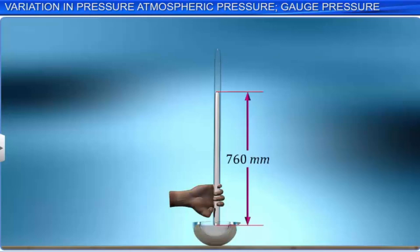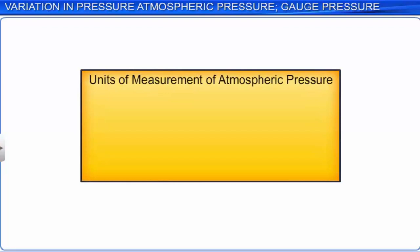There are different units of measurement for atmospheric pressure. It can be measured in mm or cm of mercury column in the barometer, or in Torricelli (1 Torricelli = 1 mm of mercury column), or in newton per square meter (pascal) in SI, or dyne per square centimeter in the CGS system, or in bars (1 bar = 10⁵ pascals).